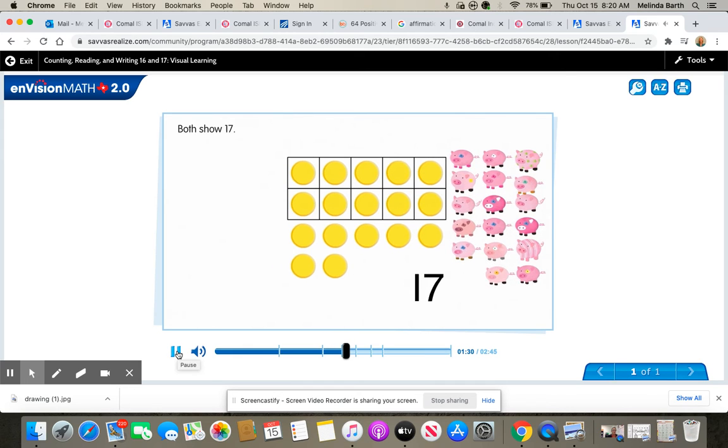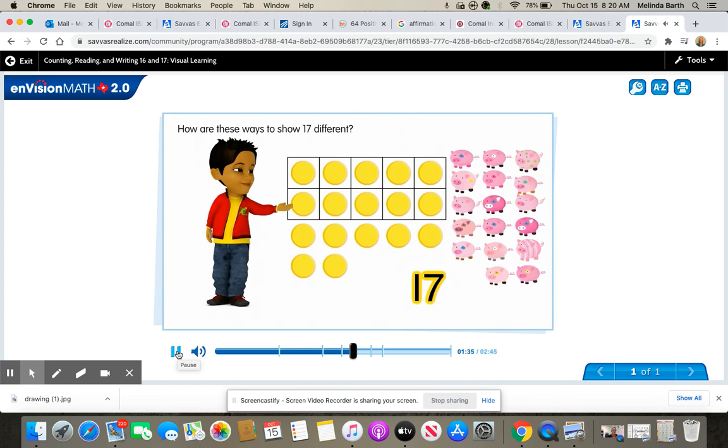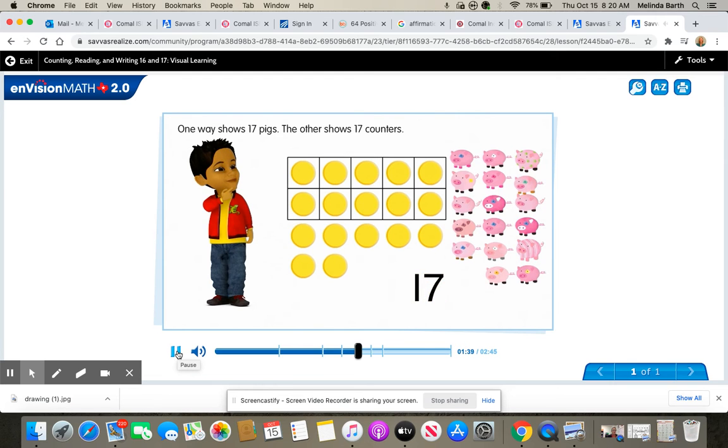Both show 17. How are these ways to show 17 different? One way shows 17 pigs, the other shows 17 counters.